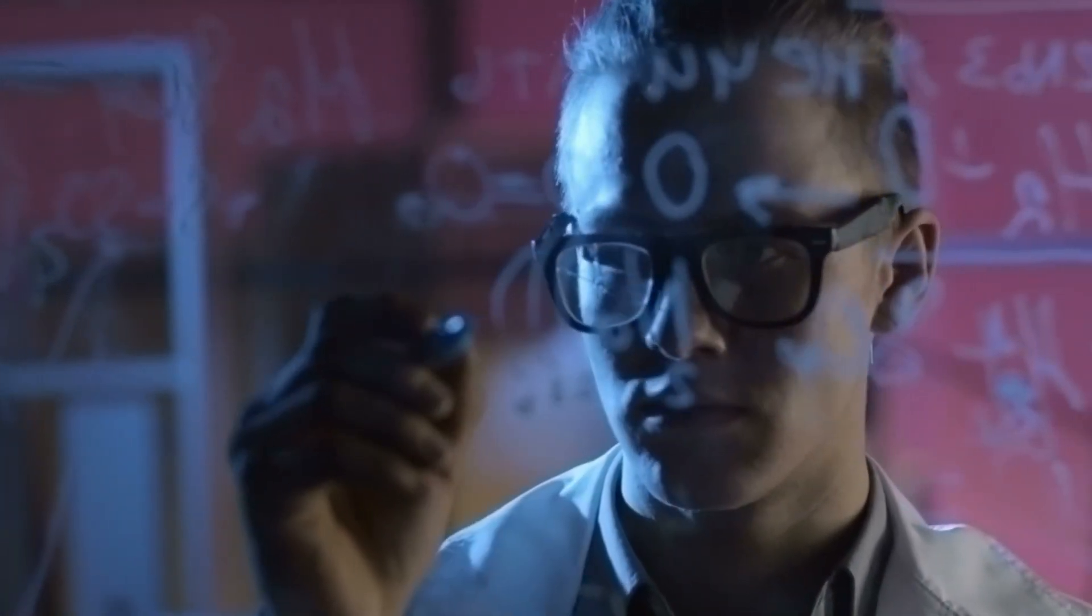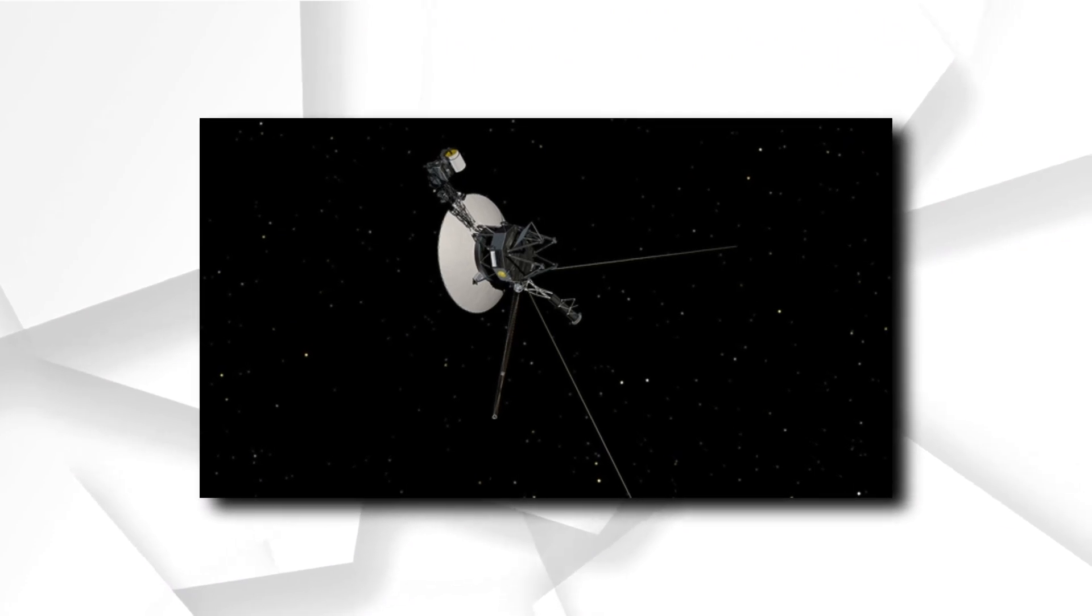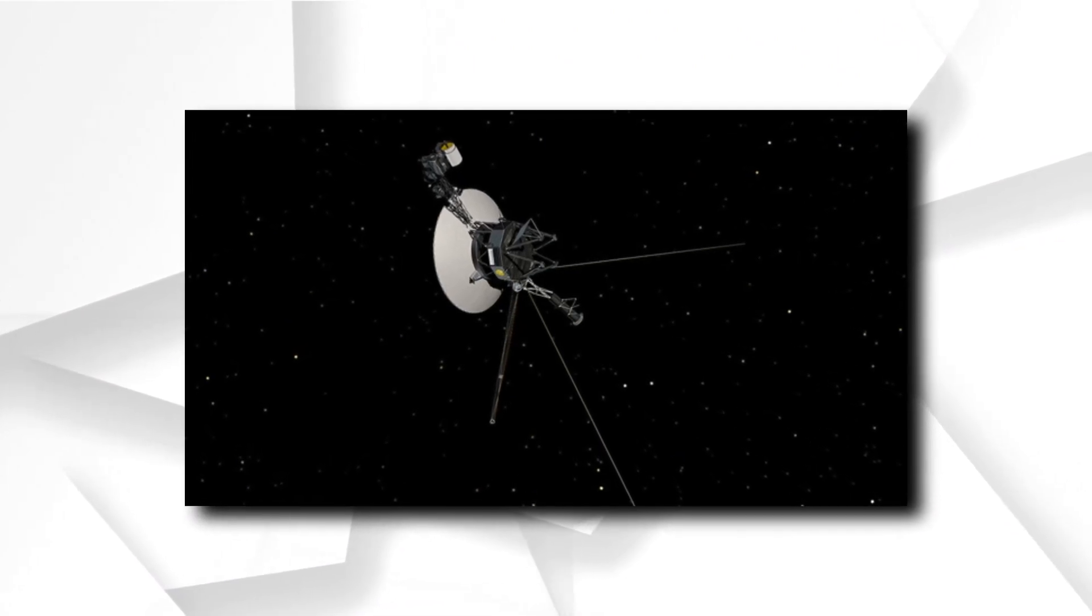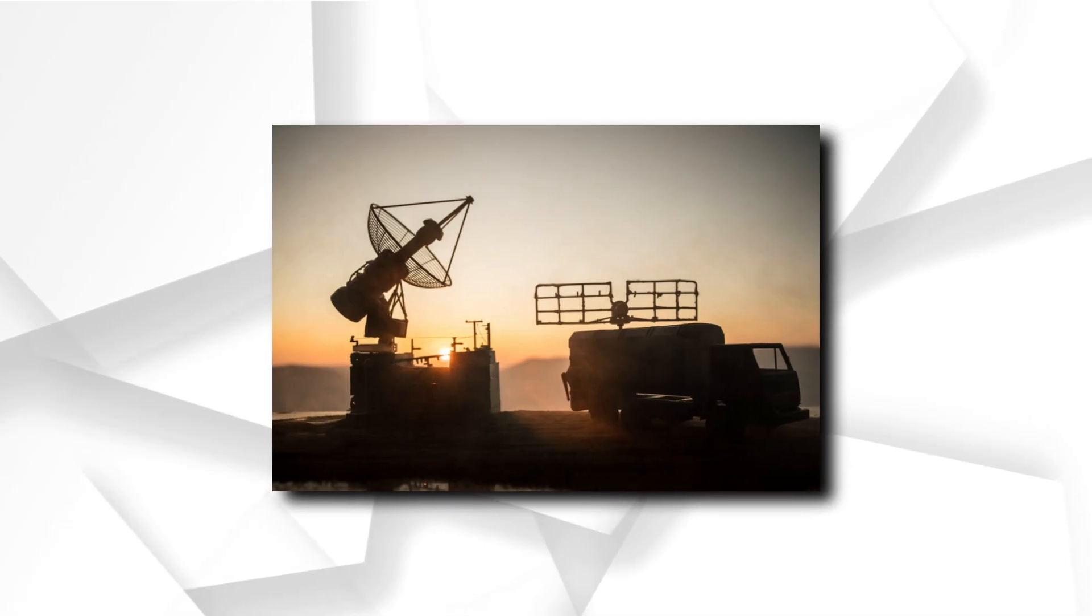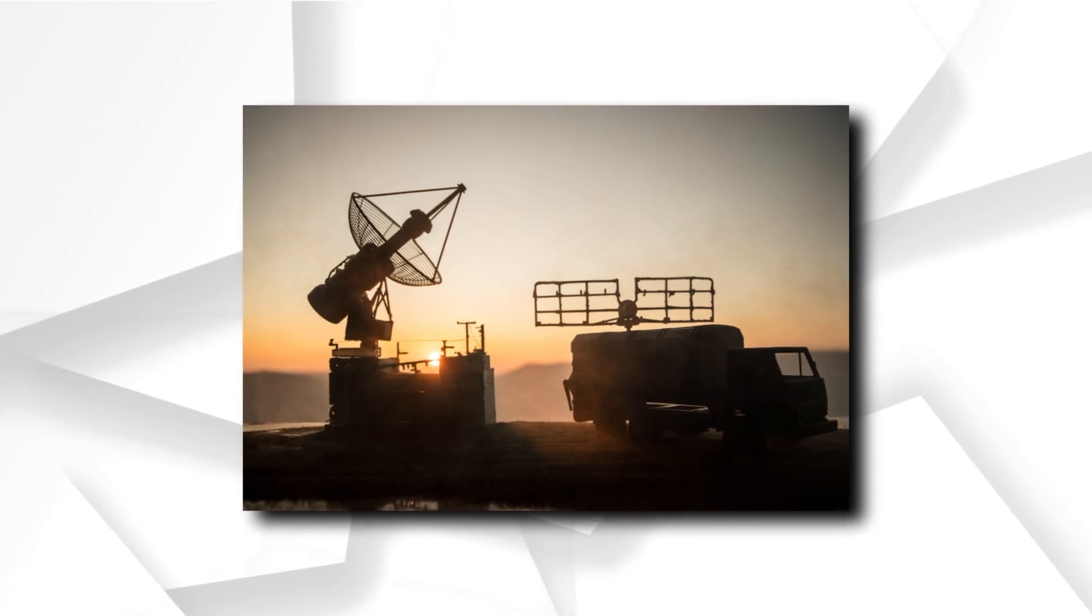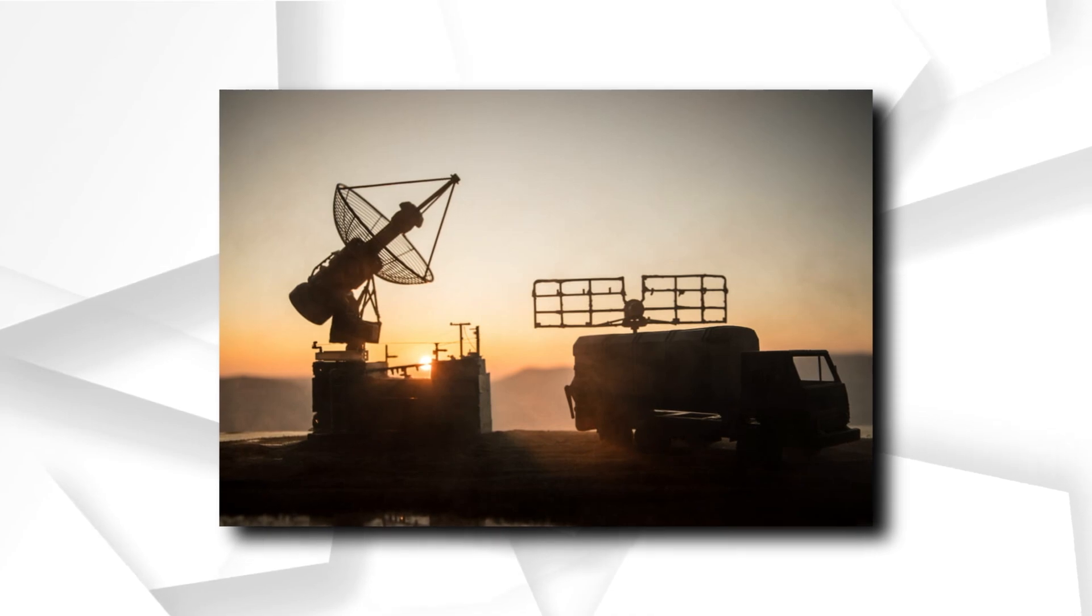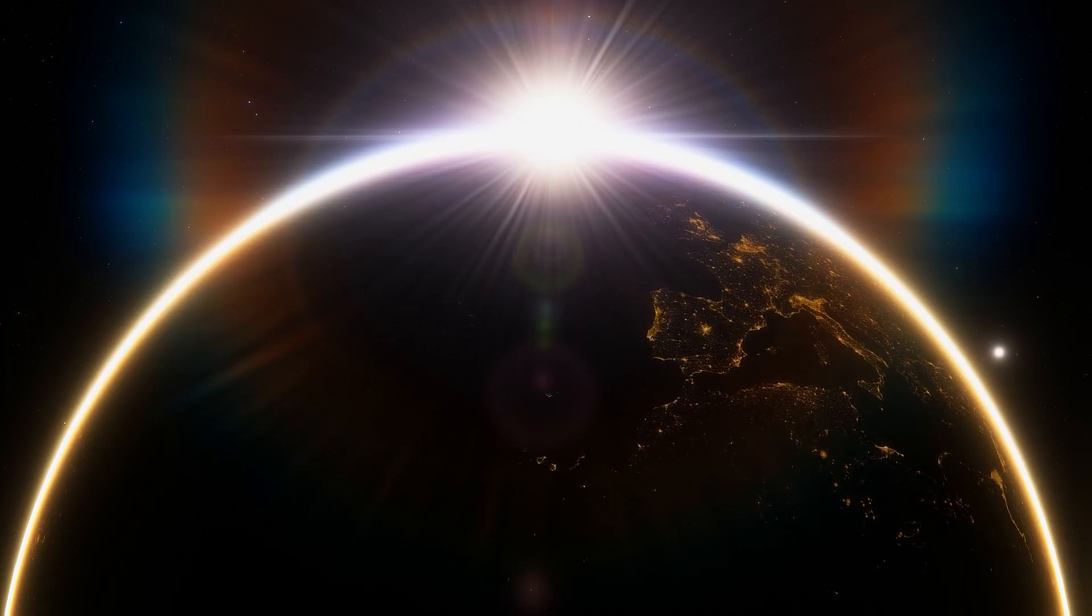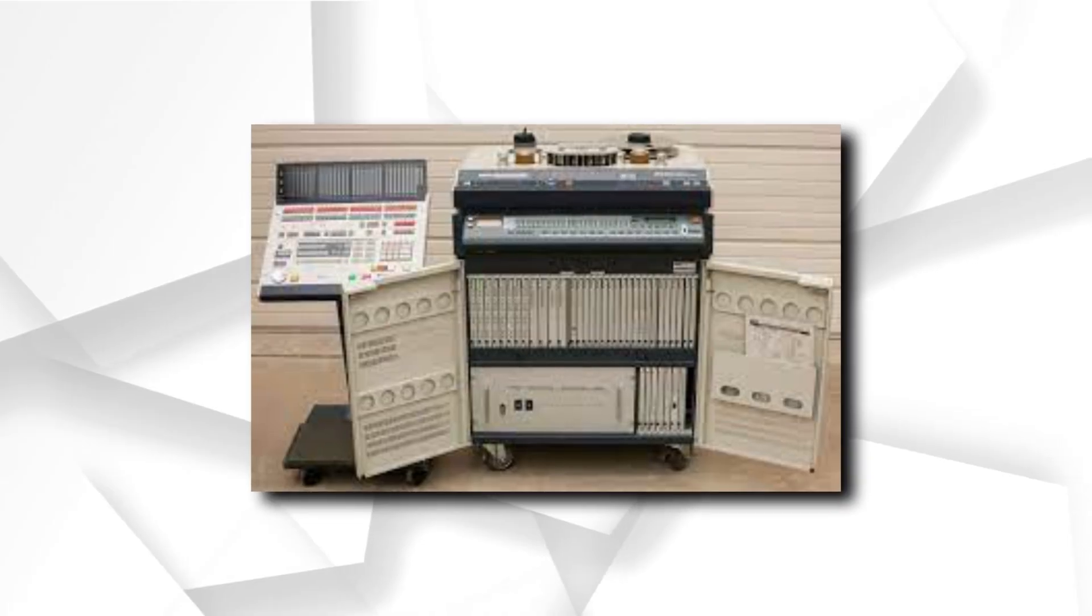As the program went on, Voyager 1's main objective was to investigate Jupiter, Saturn, and Titan, Saturn's moon. Voyager 2 was similarly intended to study Jupiter and Saturn, but its course would have allowed it to either divert to Titan as a backup for Voyager 1 or continue to Uranus and Neptune. Voyager 2 would receive a mission extension to send the probe towards Uranus and Neptune after Voyager 1's goals were successfully met.